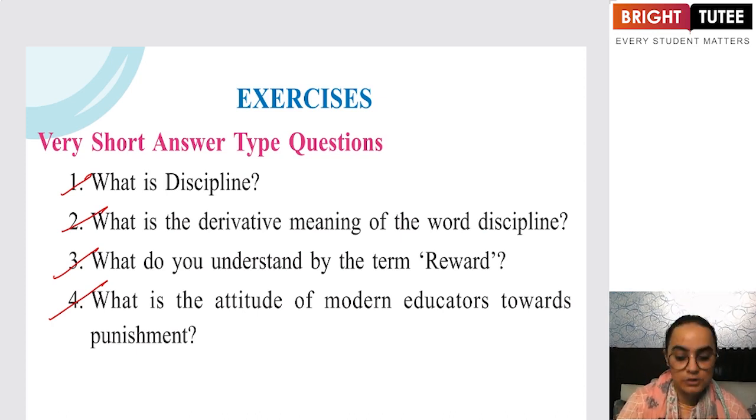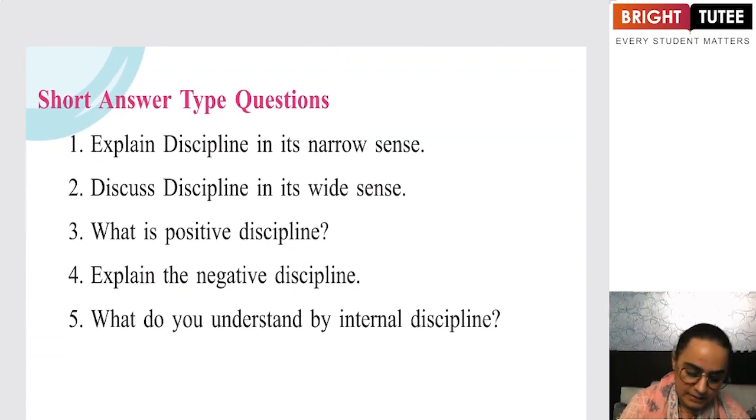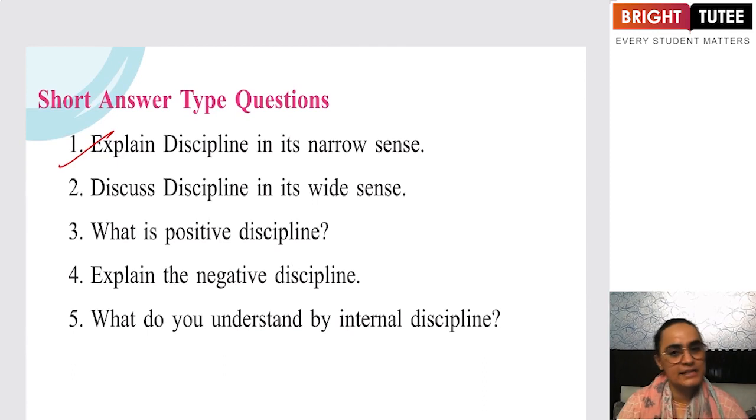Explain discipline in a narrow sense. As we have discussed, in a narrow sense, discipline meant listening to the commands and following the instructions which were given to you by somebody who was an authority.